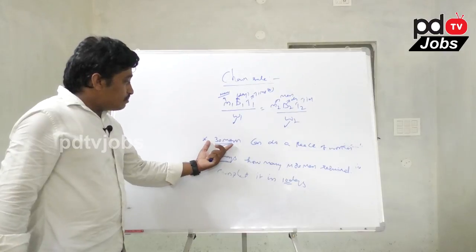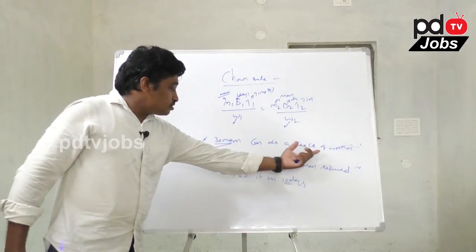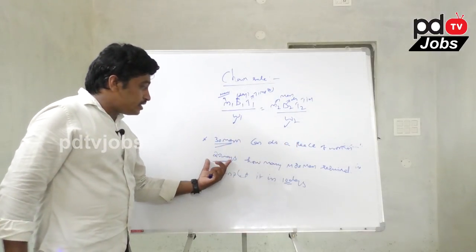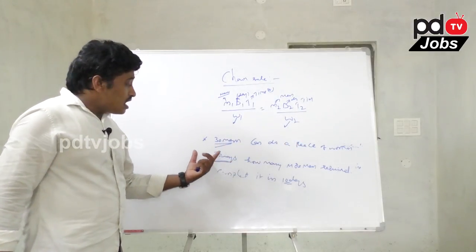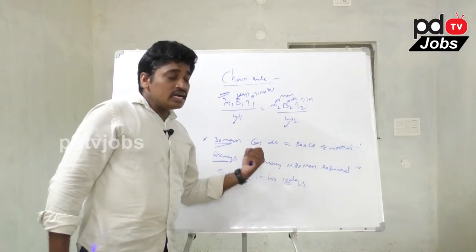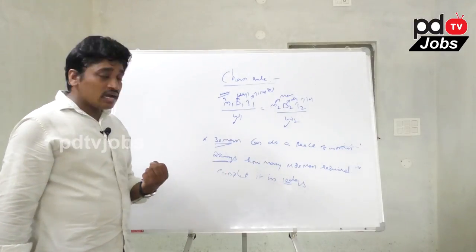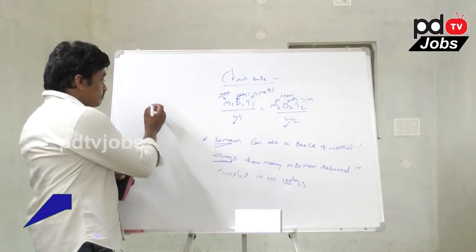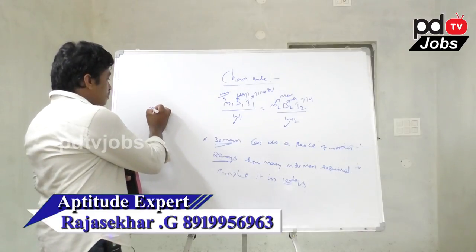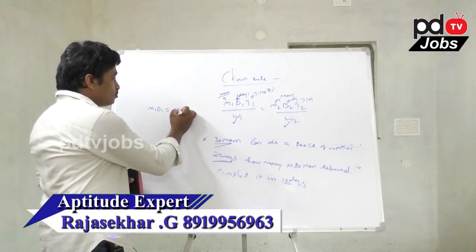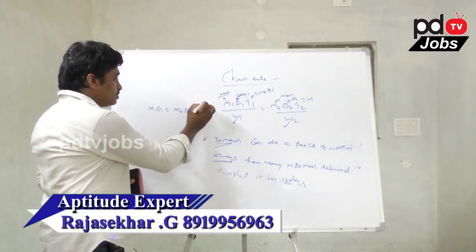Here, 30 men can do a piece of work in 20 days. We apply the same formula: M1 × D1 = M2 × D2, where M1 is 30 and D1 is 20.